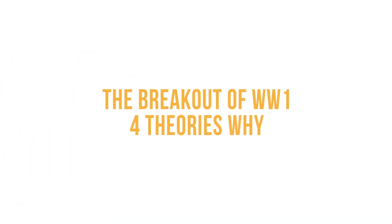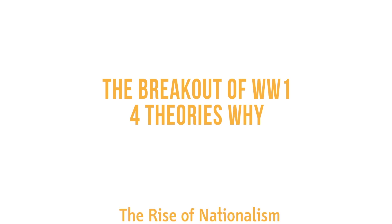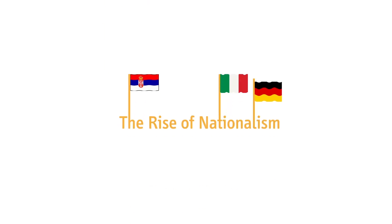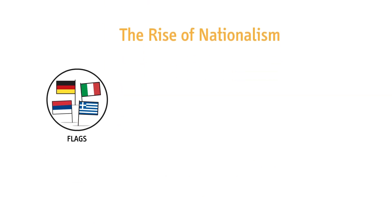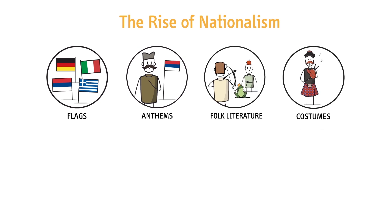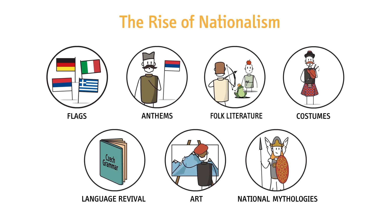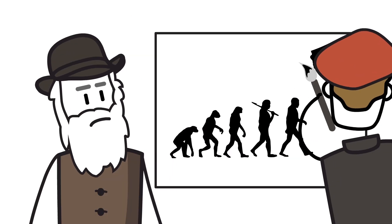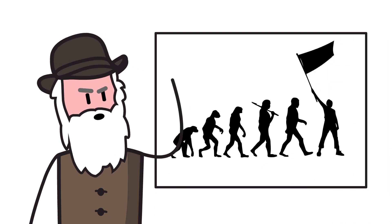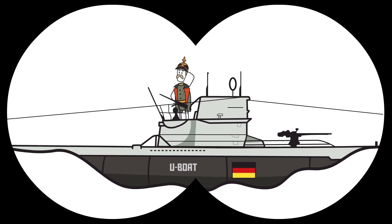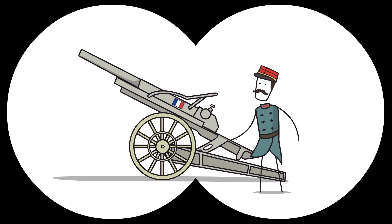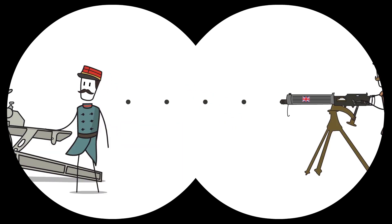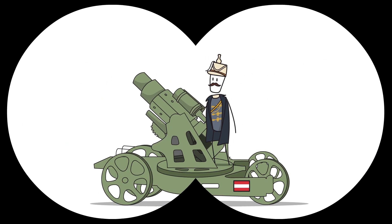So, here are four leading theories of what caused World War One. One: the rise of nationalism. Nationalism, an extreme form of patriotism which expressed itself in many ways, became the dominant ideology in 19th century Europe. Some even saw it as a natural stage in evolution. So many Europeans were actually eager to fight for land, honor, and country.